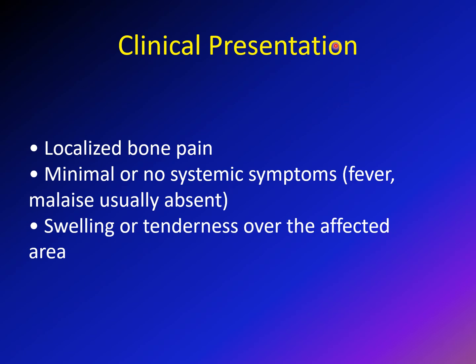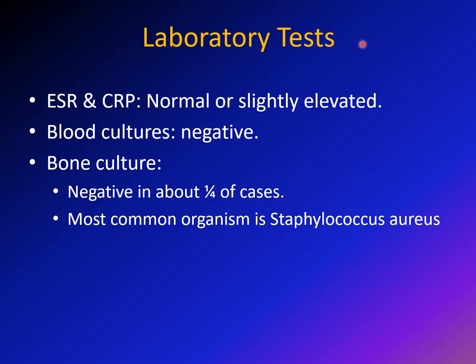The clinical presentation: the child will complain of localized bone pain — for example, in the proximal tibia or femur. There is usually no systemic manifestation, no fever, no malaise, or these are very minimal. Sometimes there is swelling and tenderness over the affected area.